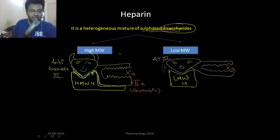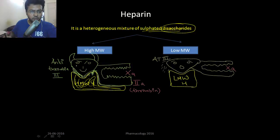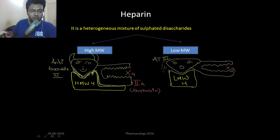Now let's look at its mechanism of action. This is high molecular weight Heparin — look how large it is. High molecular weight Heparin provides a good bed for antithrombin 3. Antithrombin 3 sleeps nicely on high molecular weight Heparin and inactivates factor 10 and factor 2, which is also called thrombin.